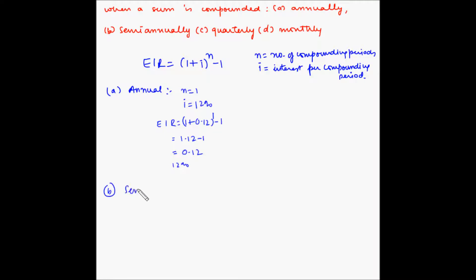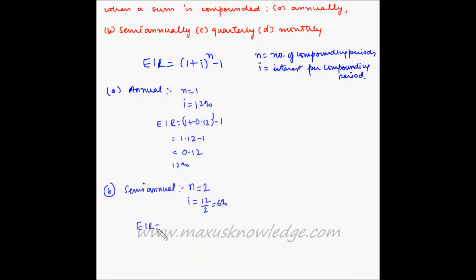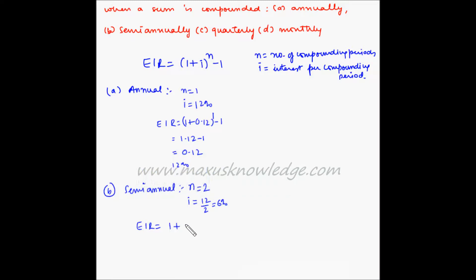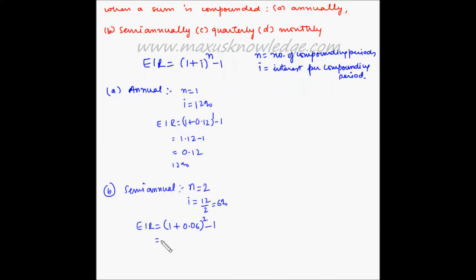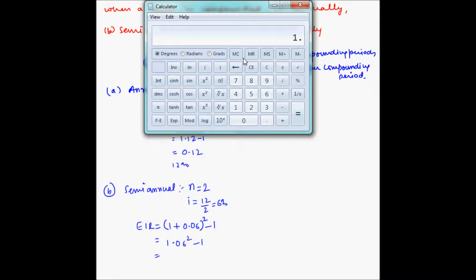In the case of semi-annual compounding, the number of compounding periods becomes 2 and the interest rate per period becomes 12 ÷ 2 = 6%. So the effective interest rate equals (1 + 0.06)^2 − 1 = 1.06 squared − 1 = 0.1236, which is 12.36%.